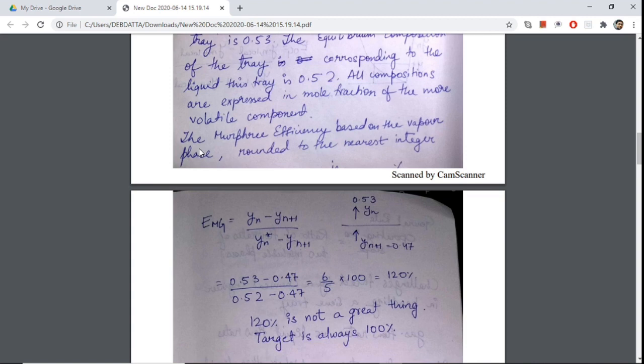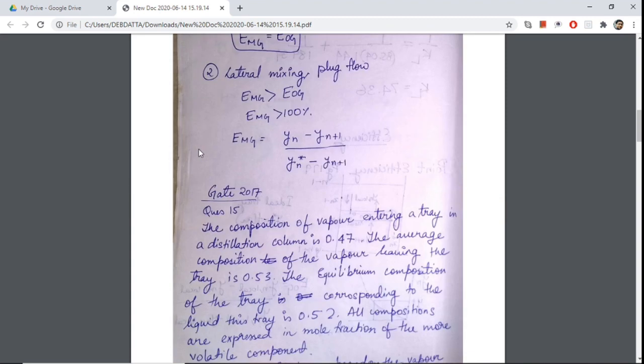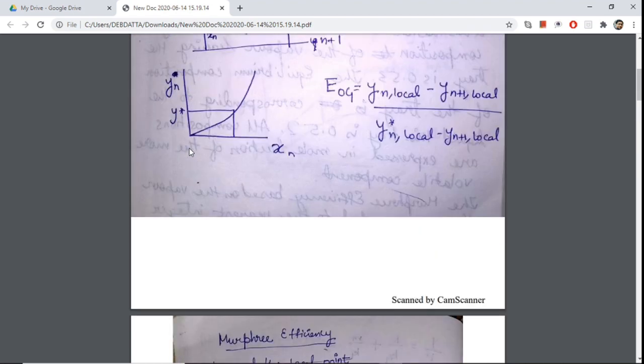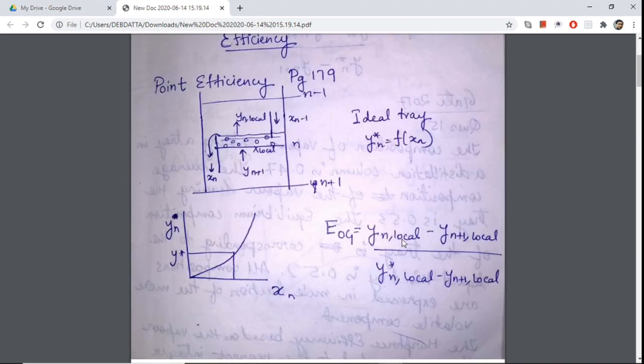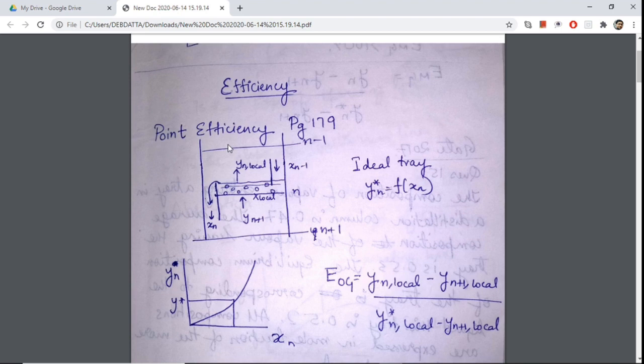One more thing you should notice here is that I am not writing the huge descriptions of each and everything. I am just pointing out some diagrams and some formulas and I am referencing the page number over here. This will keep the length of my notes short and will also help me to go to some book. This reference is from Robert Treybal. I can directly go to Treybal from here if I face any difficulty, but I'm not adding it here.